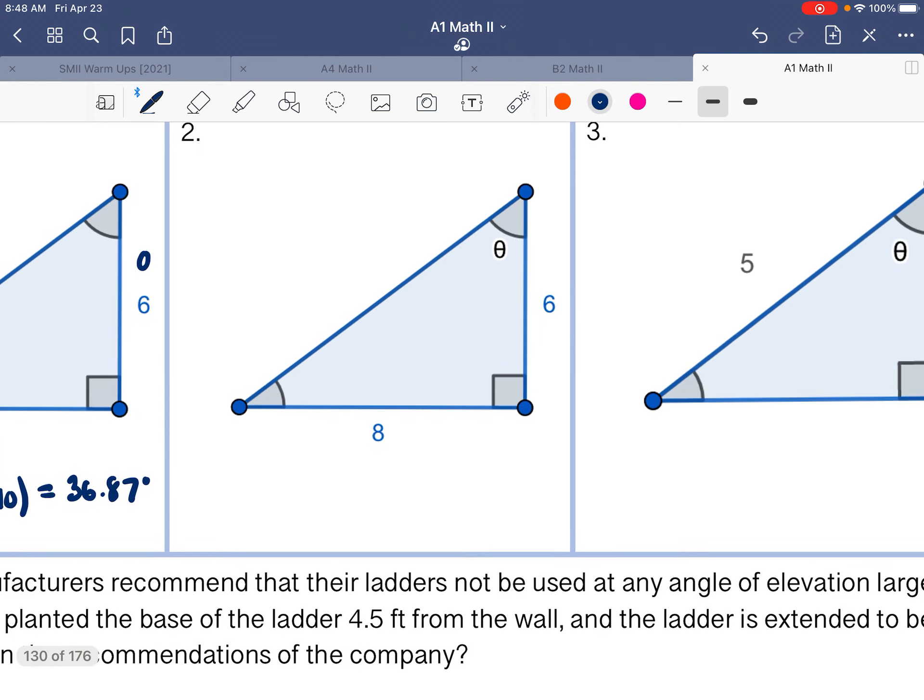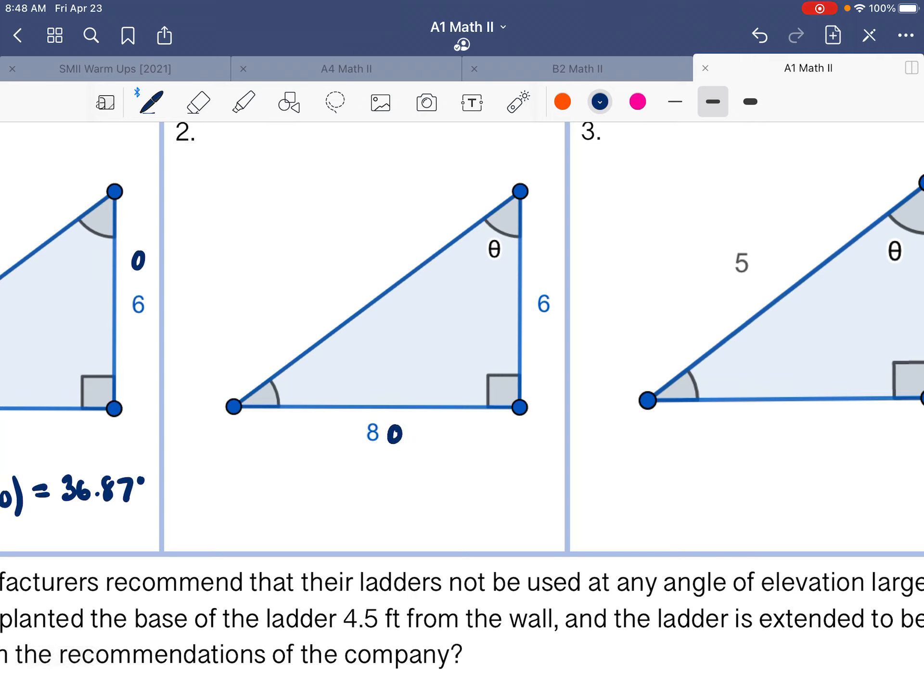Number two, we have the opposite side to our reference angle is here, and then this side is the adjacent, so we need to be using tangent. So we have tangent of our unknown angle is equal to 8 over 6. And then when we take tangent inverse of both sides, we end up with tangent inverse of 8 sixths, which gives us a value, if we plug it into a calculator, of 53.13 degrees.